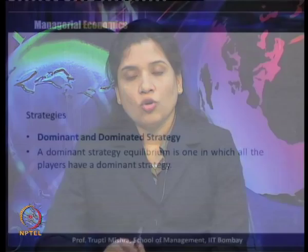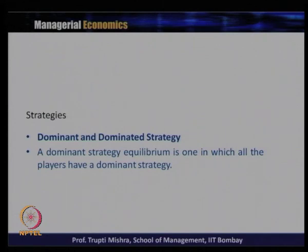Strategy B is the dominated strategy because it is not the best looking at whatever strategy is taken by the rivals or all possible strategies taken by the opponents. A dominant strategy equilibrium is one in which all the players have a dominant strategy. It is not about Nash equilibrium — it is about dominant strategy equilibrium, where all players have at least one dominant strategy and through that we reach the dominant strategy equilibrium. If one player has a dominant strategy but the other does not, we cannot get a dominant strategy equilibrium.